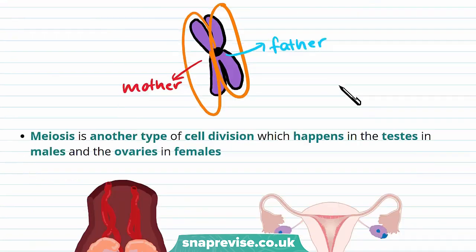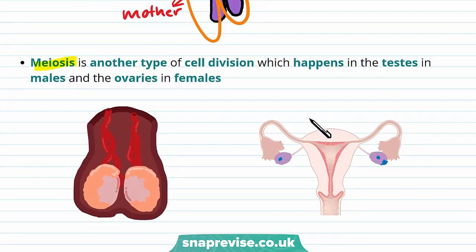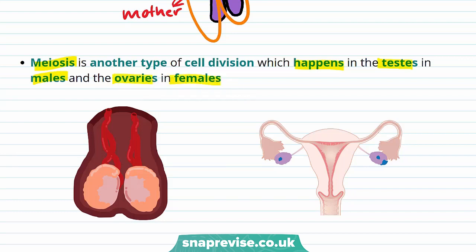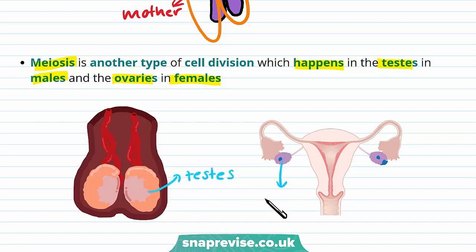Meiosis is another type of cell division which happens in the testes in males and the ovaries in females. In the testes, meiosis produces sperm, and in the ovaries, meiosis produces eggs.